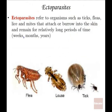Ectoparasites are organisms such as fleas, lice, and ticks that attach or burrow within the skin and remain for relatively long periods of time. The mosquito is not considered a parasite, because it doesn't live on or under the skin, whereas fleas, lice, and ticks certainly do — so they're a special class of parasites.